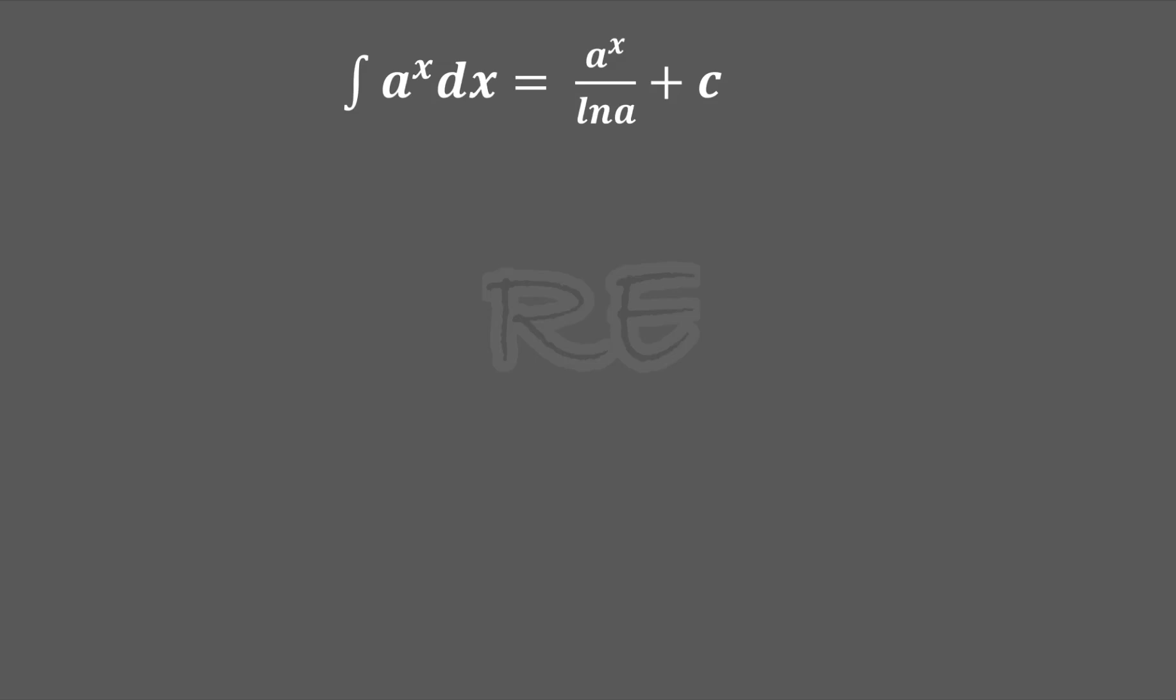e to the x and ln x are inverse functions. Therefore when we compose e to the ln a we'll get a. e to the ln x is equal to x. When we raise both to the x power, e to the ln a to the x is equal to a to the x. By the power of a power rule, we multiply the exponents: e to ln a times x is equal to a to the x.